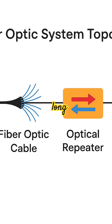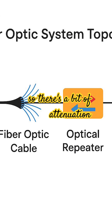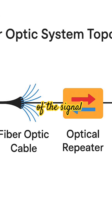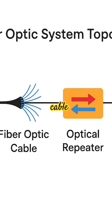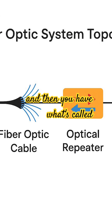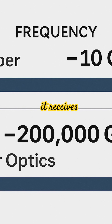Over long lengths you need what's called an optical repeater. There's some attenuation of the signal over the length of the fiber optic cable, so you have a repeater that receives the signal in and then transmits it again.